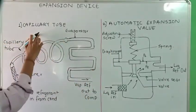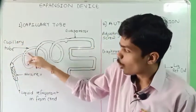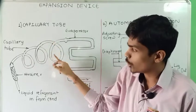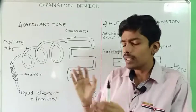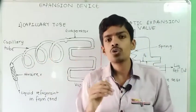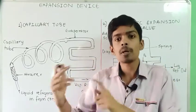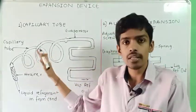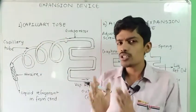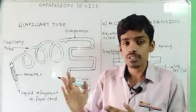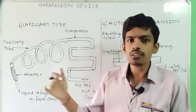The capillary tube is a small inner-diameter tube — it is a copper tube with a smaller inner diameter, and its length can vary according to the application. This copper capillary tube is generally used in small hermetically sealed equipment — refrigeration systems such as domestic refrigerators, water coolers, and so on.